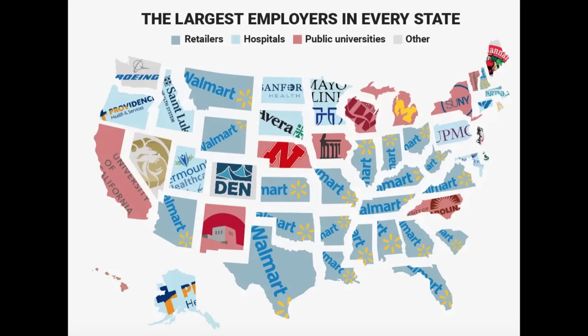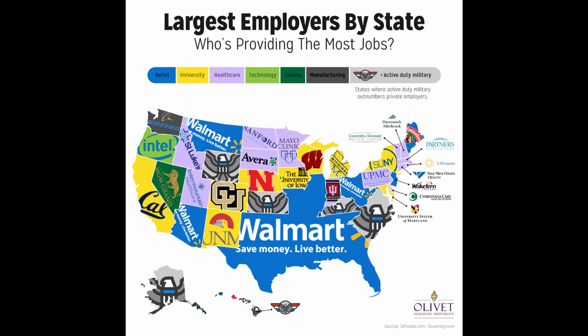There are lots of different maps that show the largest employer in each state in the US. This one is by Business Insider, and it breaks it down into other, public universities, hospitals, and retailers — by retailers they basically just mean Walmart, which is the largest employer in 21 different states. Some interesting exceptions in the other category are Washington State, whose largest employer is Boeing, and Nevada, whose largest employer is MGM, a company that owns many of the casinos on the Las Vegas Strip. Another map by Olivet Nazarene University includes active military duty, which then becomes the largest employer in the Carolinas, Virginia, Alaska, Hawaii, Kentucky, Kansas, and Wyoming.